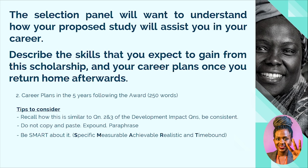Be SMART about it — Specific, Measurable, Achievable, Realistic, and Time-bound. Any time you have career plan-related questions in any scholarship essay, you must apply the SMART approach. Your plans have to be specific, measurable, achievable, realistic, and time-bound. Some examples you can consider for your short or mid-term five-year plan include community work, advocacy, media houses, and trainings.